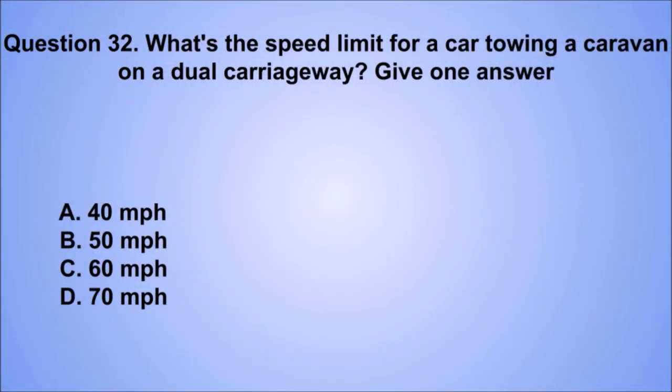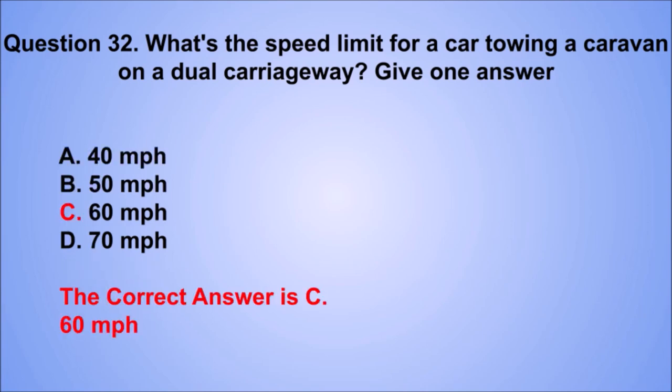Question 32. What's the speed limit for a car towing a caravan on a dual carriageway? Give one answer. A: 40 mph. B: 50 mph. C: 60 mph. D: 70 mph. The correct answer is C: 60 mph.